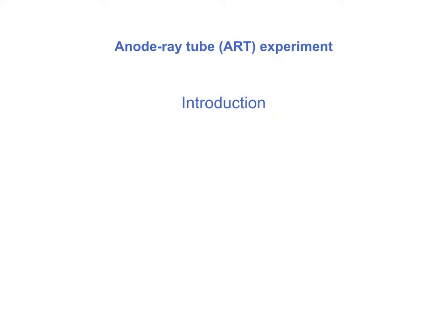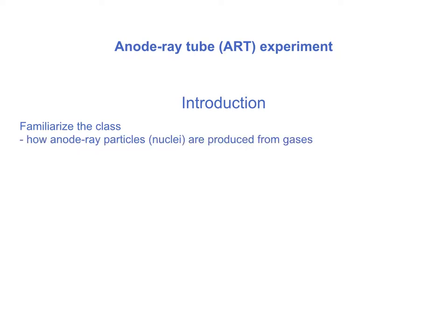In this episode we're going to look at the anode ray tube experiment. Anode rays are similar to cathode rays except that they have a different charge on them. We will familiarize ourselves with how anode rays are produced and how this discovery helped the investigation of atomic structure.